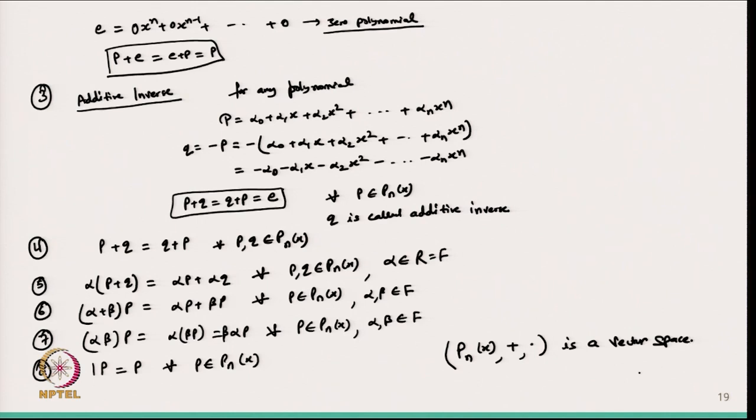So from here we can say that Pn(x), the set of all polynomials of degree less than or equal to n under usual addition and scalar multiplication, is a vector space. Today we discussed two main examples: the vector space Vn and the polynomial space Pn(x), and we showed how to check whether a set is a vector space. In the next lecture, we will continue with the concept of vector spaces. Thanks for watching.